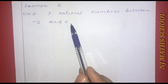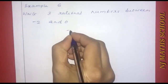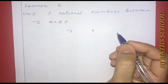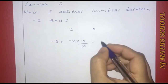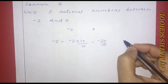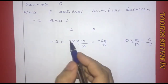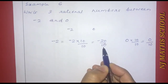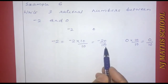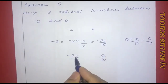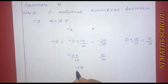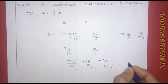Example 6: Write three rational numbers between negative 2 and 0. We multiply the numerator and denominator by 10. Negative 2 becomes negative 20 by 10, and 0 becomes 0 by 10. Between negative 20 by 10 and 0 by 10, we have negative 19 by 10, negative 18 by 10, and so on, down to negative 1 by 10.